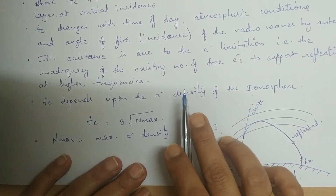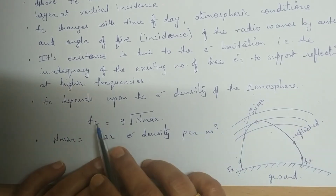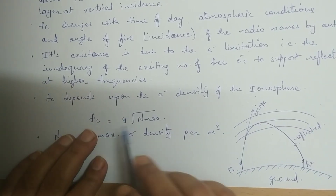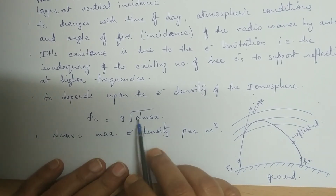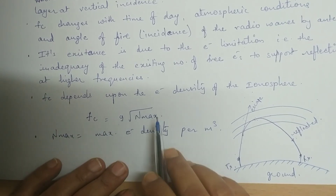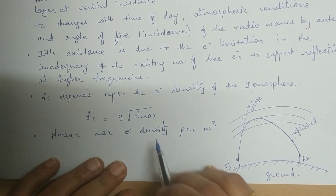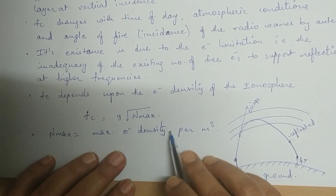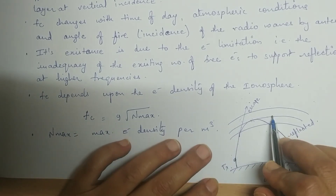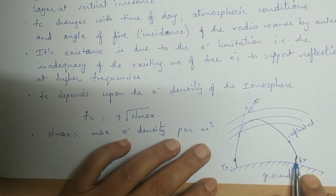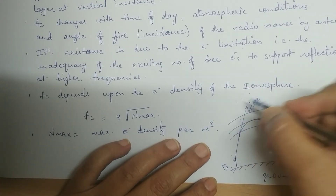The critical frequency depends upon the maximum electron density of the ionosphere. The relationship between critical frequency and maximum electron density is given by: fc = 9 × √Nmax, where Nmax is the maximum value of electron density per meter cube.